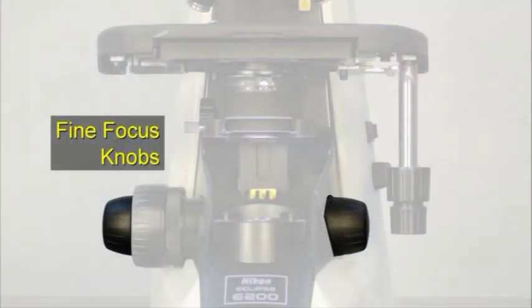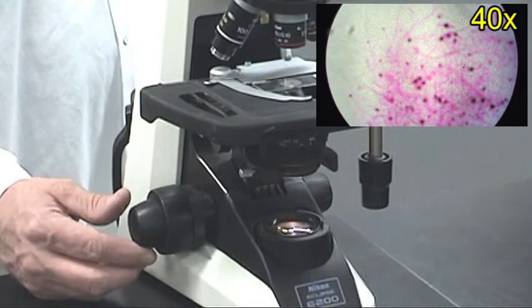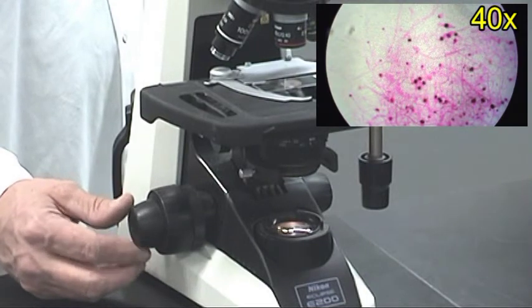The two smaller knobs on both sides of the microscope are fine focus knobs. They move the stage in small increments to sharpen the image.